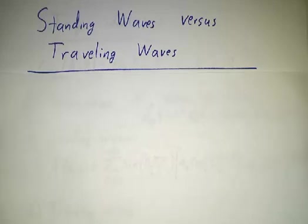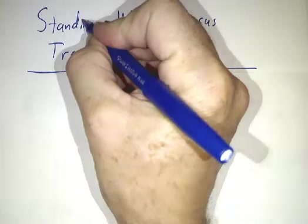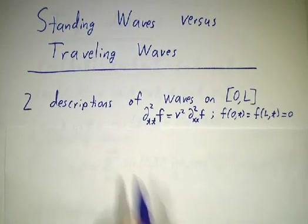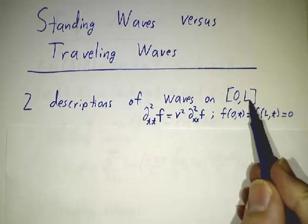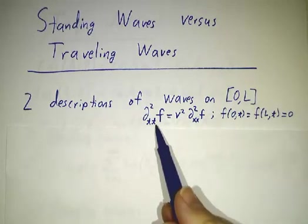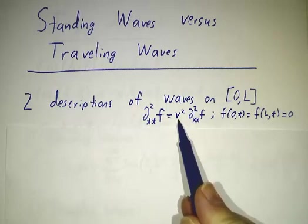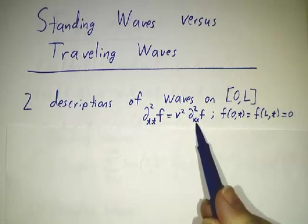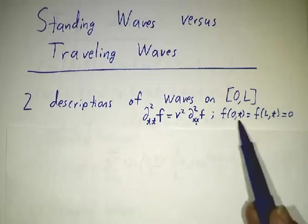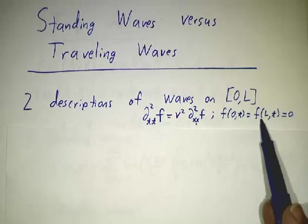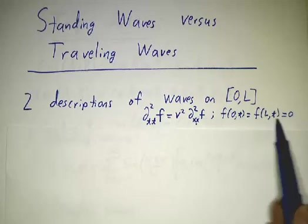In previous videos, we've gone over two different ways to solve the problem of a vibrating string. We're talking about a wave on the interval zero to L, and by a wave I mean a solution to the wave equation. Second derivative with respect to time is a constant v squared times the second derivative with respect to x, with the boundary conditions that the two ends are tacked down, f and f are always zero no matter what the time is.